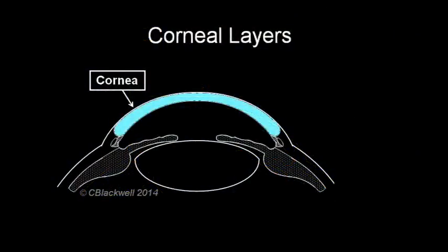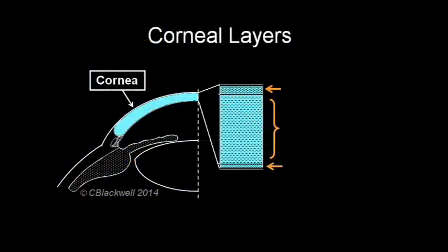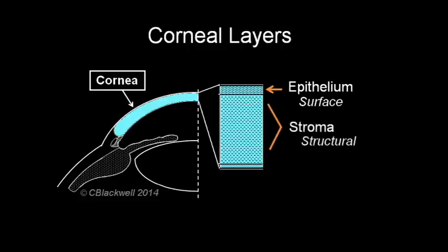Looking closer at the cornea, we are taking a section and magnifying it, showing it has three distinct layers. On the outer surface is the epithelium, a lot like the surface layer of your skin. The middle layer, the stroma, occupies most of the thickness of the cornea, providing its shape and structural integrity.